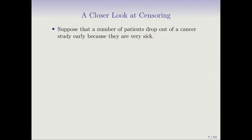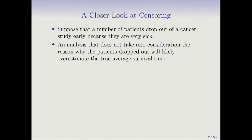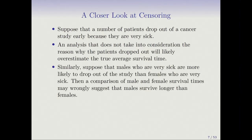We need to worry about whether censoring will bias our analysis. Suppose patients drop out of a cancer study because they're very sick — not because they die, but because they're too sick to come in or move away to get other treatments. If we don't account for the reason they dropped out, the survival time will be overestimated, because we assume they're censored rather than near death. Similarly, if males were more likely to drop out because they're sick, we might wrongly conclude males survive longer than females.